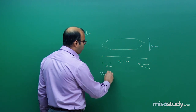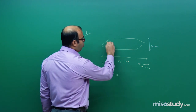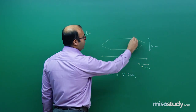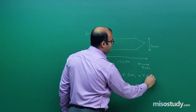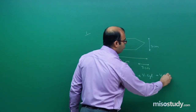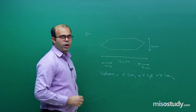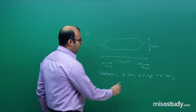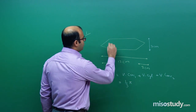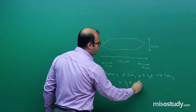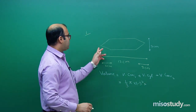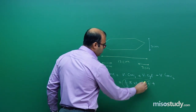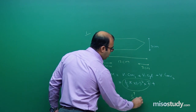The volume of air is the total volume of the figure, which is made up of three parts: cone 1, the cylinder in the middle, and cone 2. So total volume = volume of cone 1 + volume of cylinder + volume of cone 2. The volume of each cone is 1/3 πr²h, where radius = 1.5 cm (half of diameter 3) and height = 2 cm.